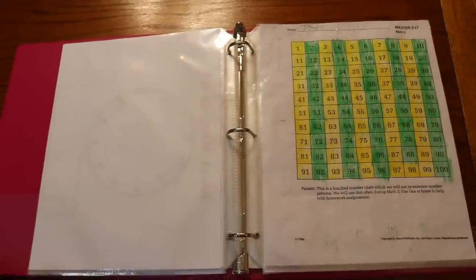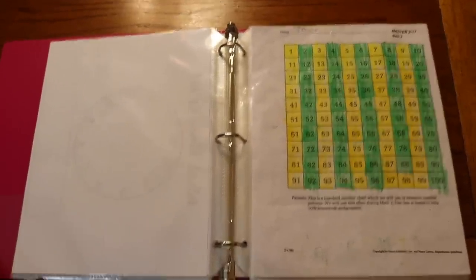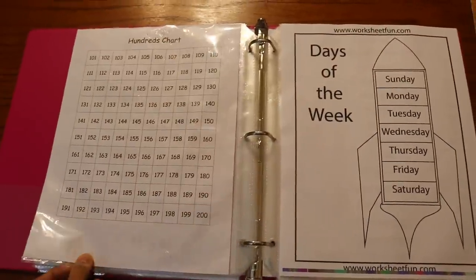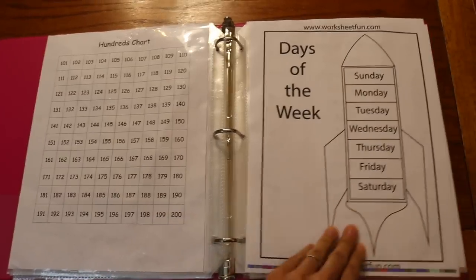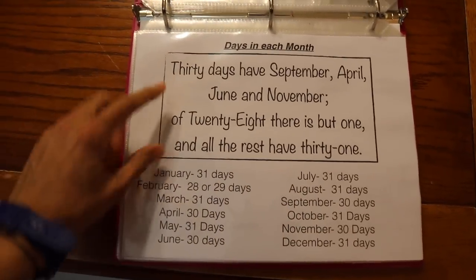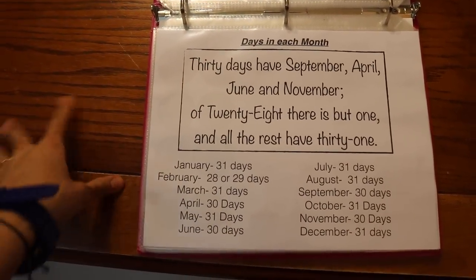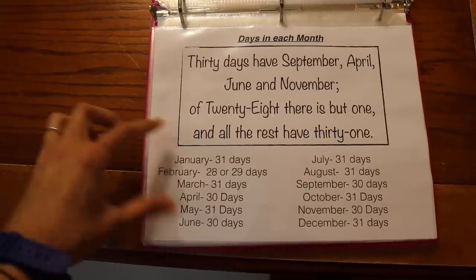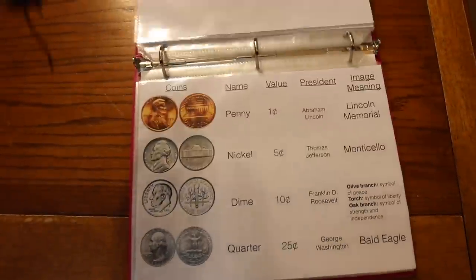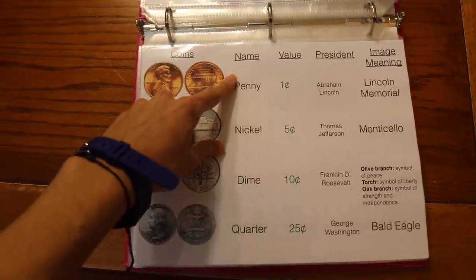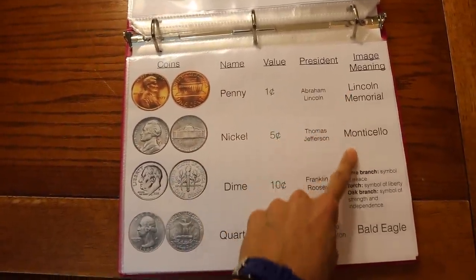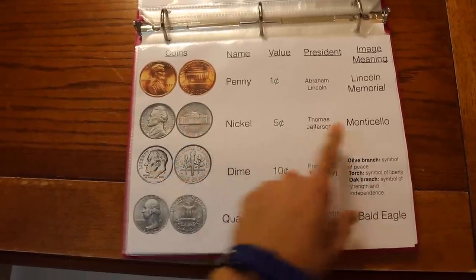And then from here on in the binder, it's just like reference sheets that she uses throughout the day for her curriculum. So here's a hundreds chart, here's the hundreds chart to 200, days of the week, months of the year. Here we have days in each month, a little poem to memorize to know how many days in each month, and then over here breaks it down. So this is good to have for the kids. Another thing we have here is coins. So we have the name of the coin, the value of the coin, the president on the coin, and the meaning of the coin, like what is the building here. That would be Monticello.